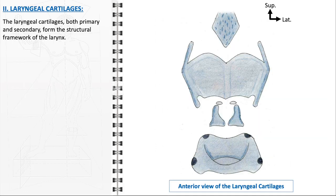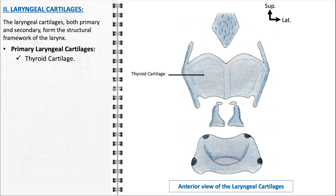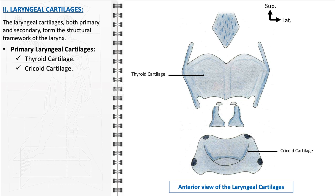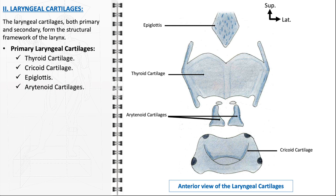The larynx is structurally supported by a framework of primary and secondary cartilages. The primary laryngeal cartilages include: the thyroid cartilage, the largest cartilage, forming the anterior and lateral walls of the larynx, providing protection and serving as an attachment site for muscles and vocal cords; the cricoid cartilage, which forms the base of the laryngeal framework and supports the opening of the airway; the epiglottis, which rises above the glottis and folds down during swallowing to prevent food and liquids from entering the trachea; and the arytenoid cartilages, crucial in the movement and function of the vocal cords, playing a key role in phonation and regulating airflow during breathing.